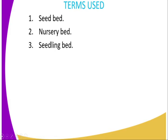Term number three, we have the seedling bed. This is a special type of nursery bed where overgrown or big seedlings from the main nursery are transplanted and grown there before the time of final transplanting is reached.